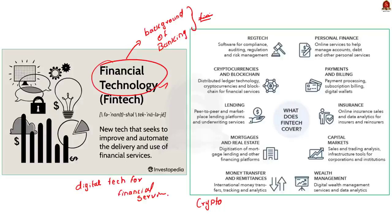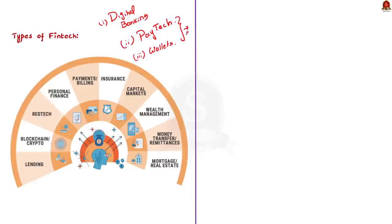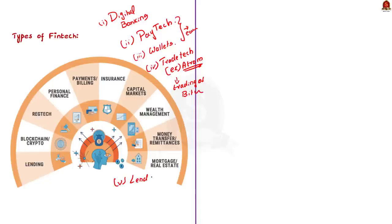Based on services offered, fintechs are categorized as: digital banking (all banking activities done online); paytech or payment technology (including GPay, PhonePe, and mobile wallets ensuring safe consumer experience); trade tech or trading technology (platforms like Bitcoin using blockchain technology for private, secure, and transparent financial transactions); insurance tech or insuretech; and lender tech, involved in deposit and lending activity. All these different technologies have one thing in common — they are all made to raise capital. Fintech is always changing, but the common thread of raising capital will remain.